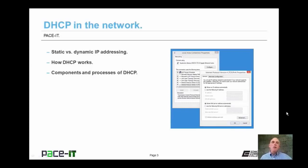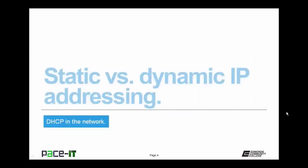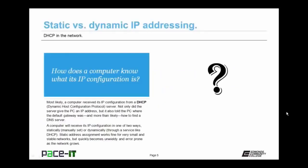With that let's go ahead and begin. How does a computer know what its IP configuration is? More than likely, a computer received its IP configuration from a dynamic host configuration protocol server. Not only did the server give the PC an IP address, but it also told the PC where the default gateway was and more than likely how to find a DNS server. A computer will receive its IP configuration in one of two ways — either statically, which means manually set, or dynamically, which means through a service like DHCP. Static IP address assignment works fine for very small and stable networks, but quickly becomes unwieldy and error prone as the network grows and more nodes come onto the network.